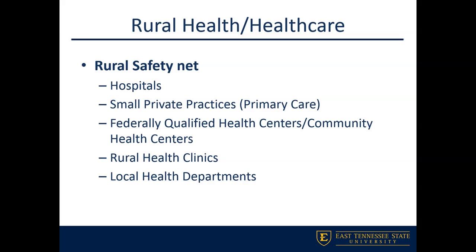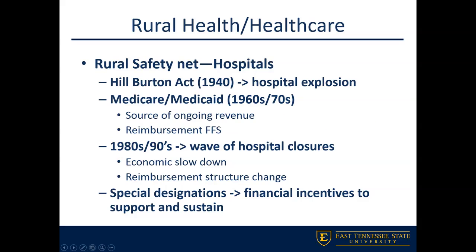We know the demographic shift is happening — we have a much older population because of out-migration. The question becomes how do we work to take care of this population? We have a couple of safety nets built in for primary care that we've talked about: FQHCs or community health centers, rural health clinics, and our local health departments. We'll look into each of those.